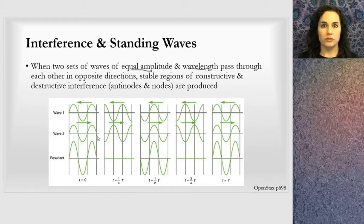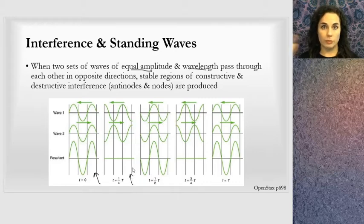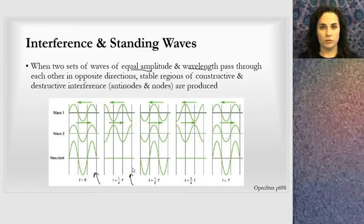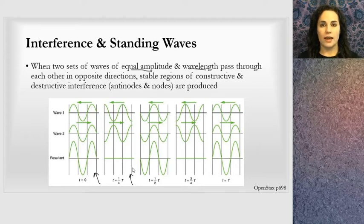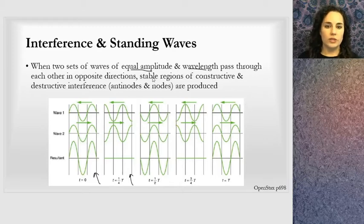This should be intuitive after what we know about interference. Some resultant is going to be a maximum value, then at some point it goes to zero. When they're a half wavelength off, they cancel each other out. When they're a full wavelength or lined up, they amplify each other. This creates stable regions of constructive and destructive interference called antinodes and nodes.